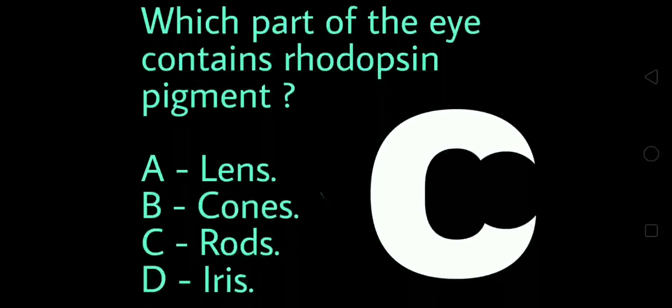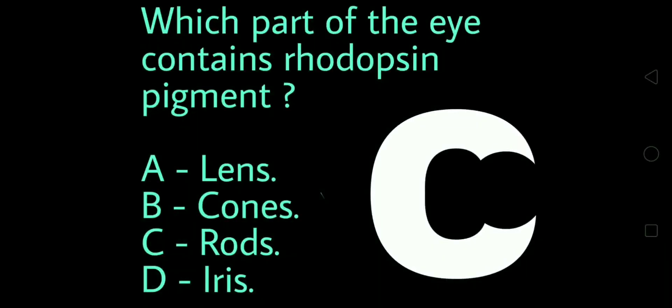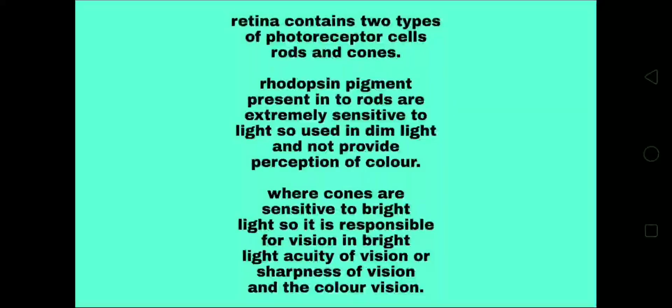The right answer is Option C: rods. In our eye, the retina contains two types of photoreceptor cells, known as rod cells and cone cells.